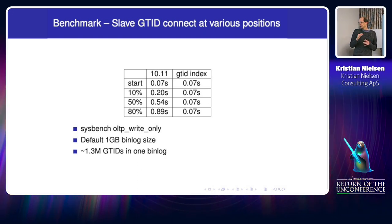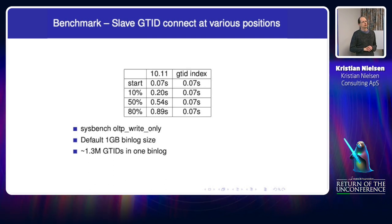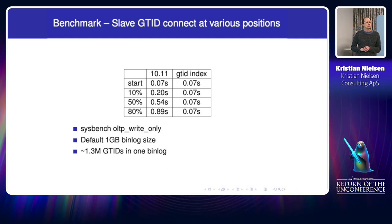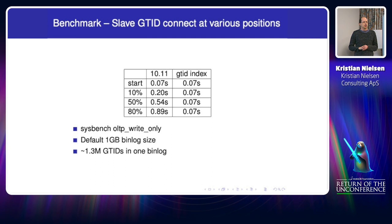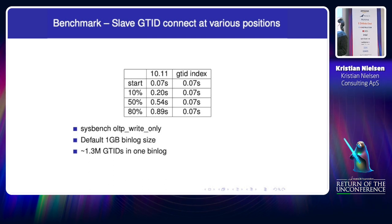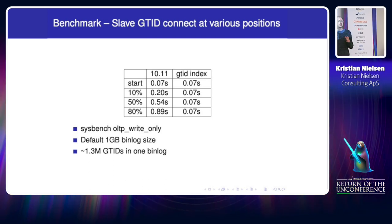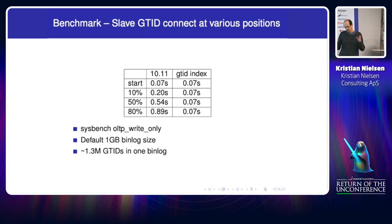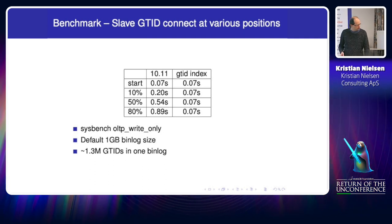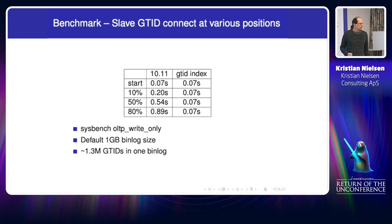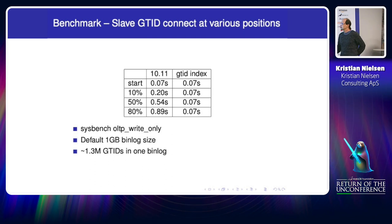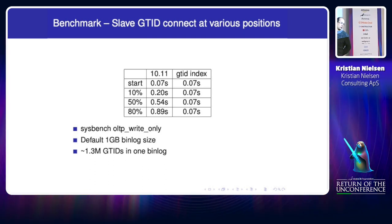Don't take the absolute numbers too literally — this is running on my laptop, everything in memory, no encryption. With the index, connection time is basically independent of starting position, because the overhead of the index lookup disappears compared to the other connection overhead. The number of read operations depends on transaction size — smaller transactions mean more reads — so very small transactions would be slower, but otherwise the result is good.